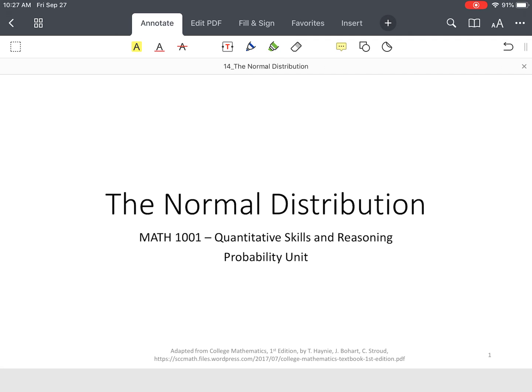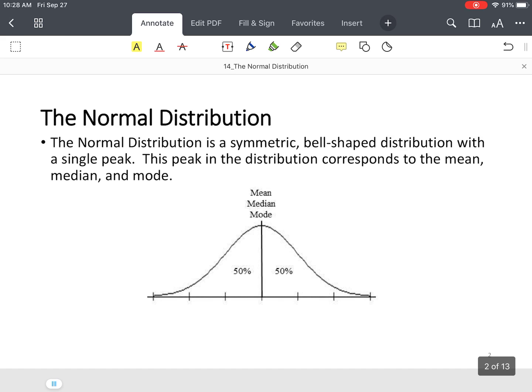In this lesson, we'll cover the normal distribution. So what is the normal distribution? It's a symmetric bell-shaped distribution with a single peak. In this distribution, the mean, the median, and the mode are all equal to one another. That makes the distribution symmetrical.